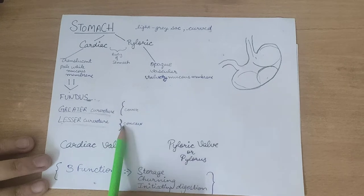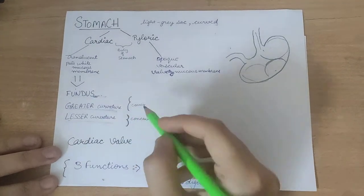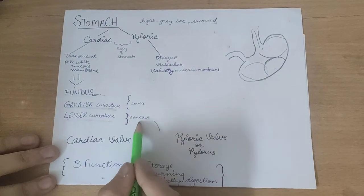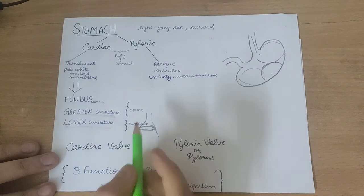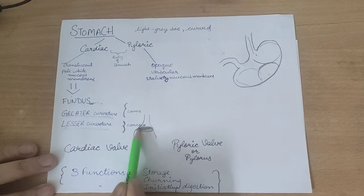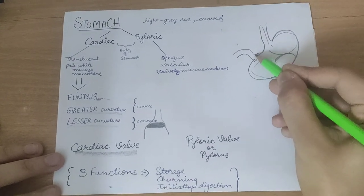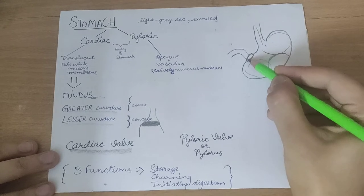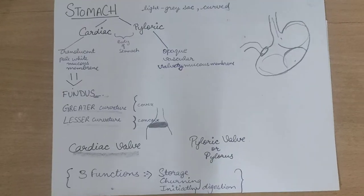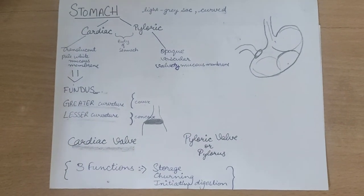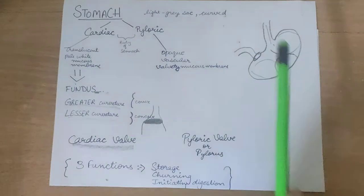The cardiac aperture at the start of the cardiac region regulates food entry into the stomach and is controlled by the cardiac valve. Where the pyloric region ends leading into the duodenum, there is the pyloric aperture regulated by the pyloric valve (also called the pylorus). The roles of the stomach are: storage, churning of food, and initiating digestion in its acidic medium — though complete digestion does not occur here.